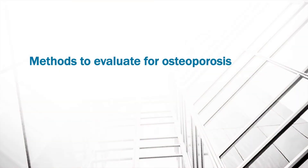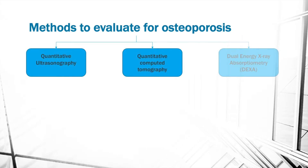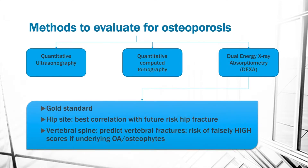Let us now take a look at the methods to evaluate for osteoporosis. We can do a quantitative ultrasonography, quantitative computed tomography, or a dual energy X-ray absorptiometry — the DEXA scan — which is the gold standard. DEXA at the hip has the best correlation with future fracture risk. DEXA of the vertebral spine also predicts vertebral fractures, but the risk is falsely high if there is underlying osteoarthritis.